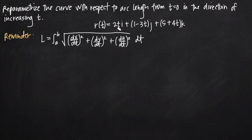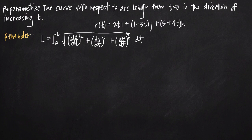To reparametrize the curve, we first need to find arc length. We have the arc length formula. Sometimes you'll see dx/dt written as f′(t), dy/dt written as g′(t), and dz/dt written as h′(t) — those formulas mean the same thing. This is Leibniz notation, and using dx/dt is more explicit because it shows we're taking the derivative of our equation for x in terms of t, rather than just f′(t). So what we need to do is pull out of our vector function our parametric equations.